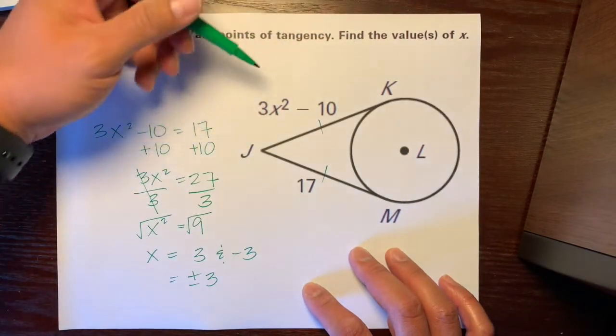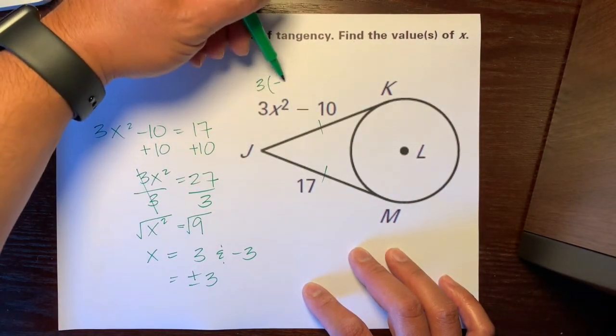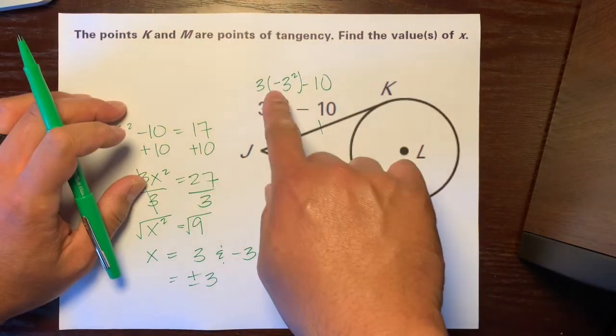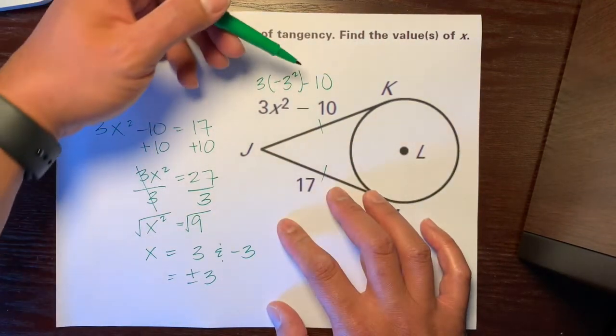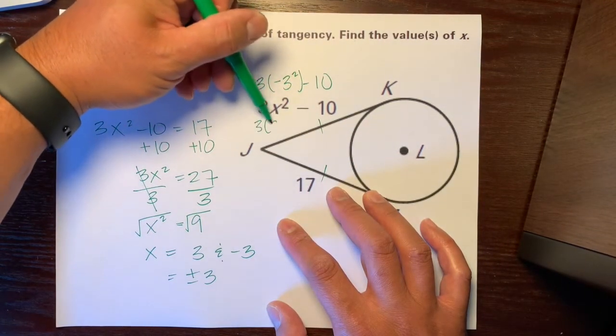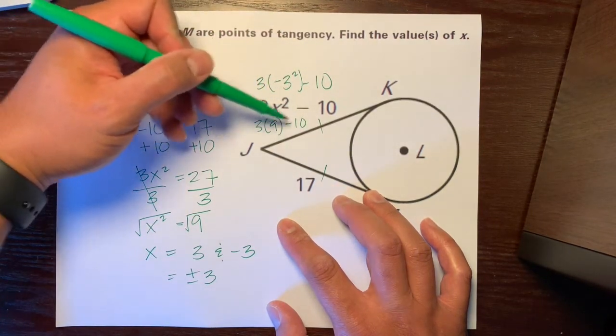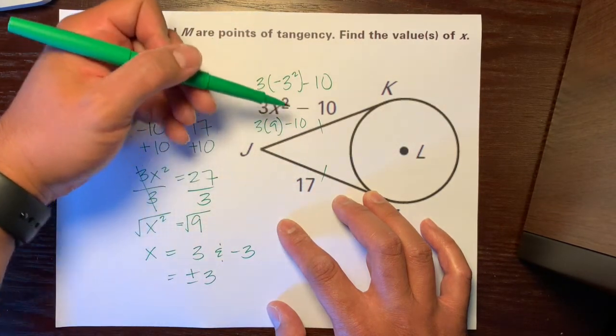So, let's plug in that negative. So, 3 times negative 3 squared minus 10. So, negative 3 squared is positive 9. So, 3 times positive 9 minus 10 would be 27. 27 minus 10 would equal 17. So, positive 17.